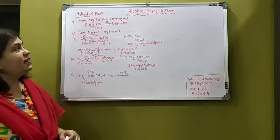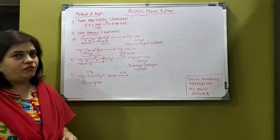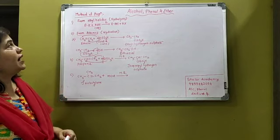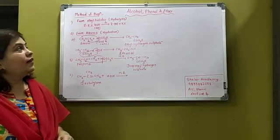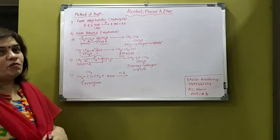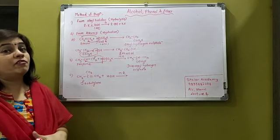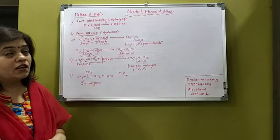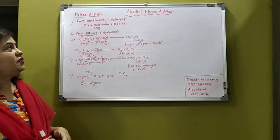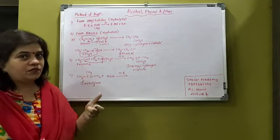Hi students, last lecture we have done the nomenclature of it. Today we will be starting with the method of preparation. The very first method of preparation of alcohols that we have done in the earlier lesson. What is the conversion? The conversion is X to OH.